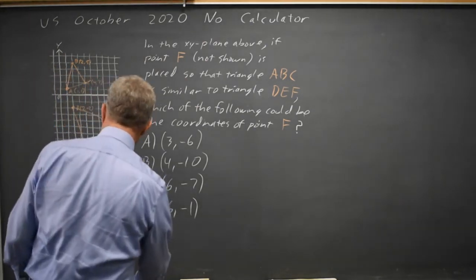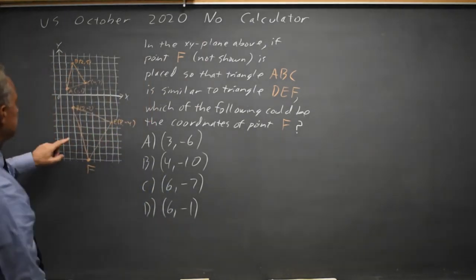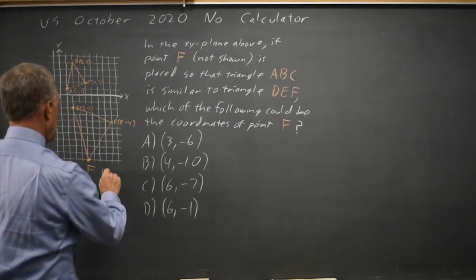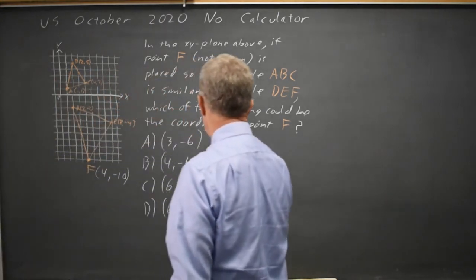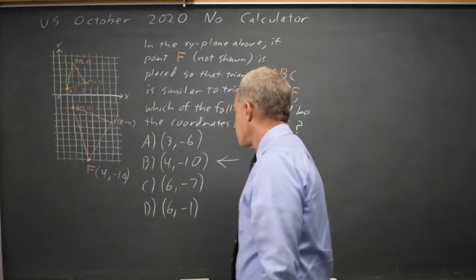So point F at X equals 4, Y equals negative 10, which is choice B would give me a similar triangle.